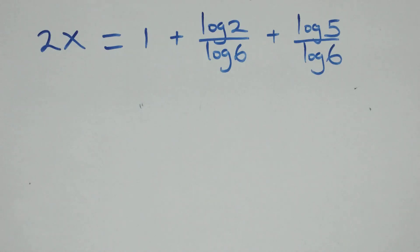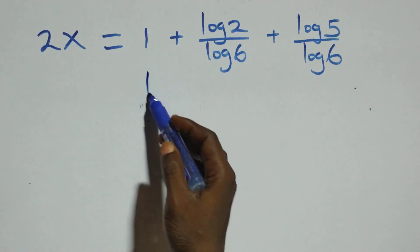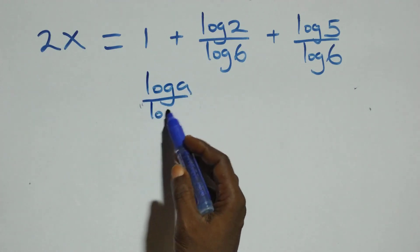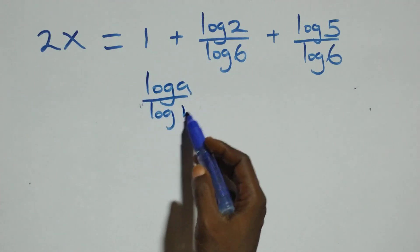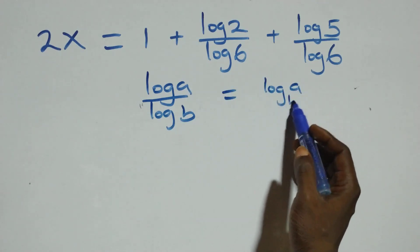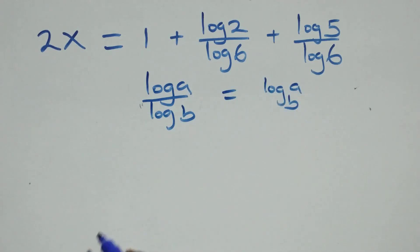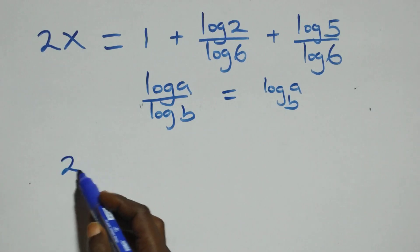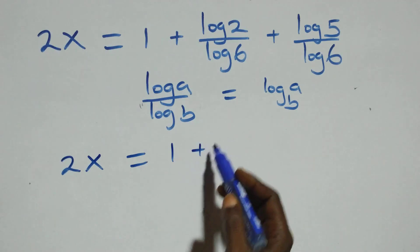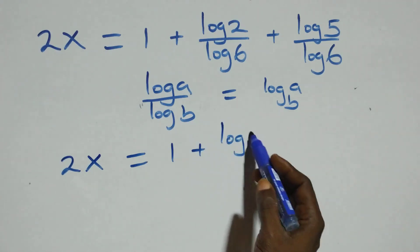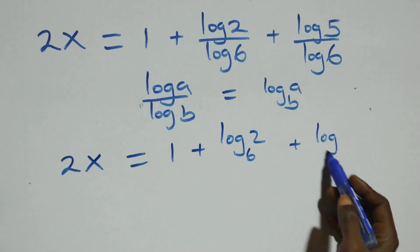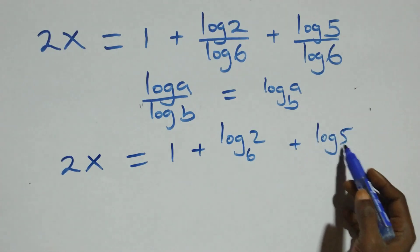Then we apply the change of base formula: log a over log b is the same thing as log a to base b. So here it becomes 2x equals to 1 plus log(2 to base 6) plus log(5 to base 6).